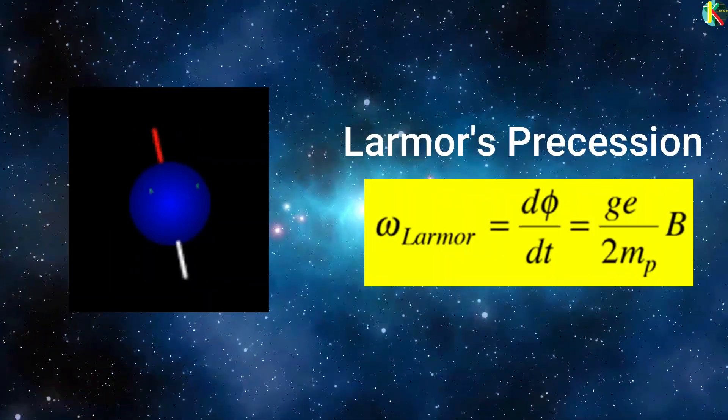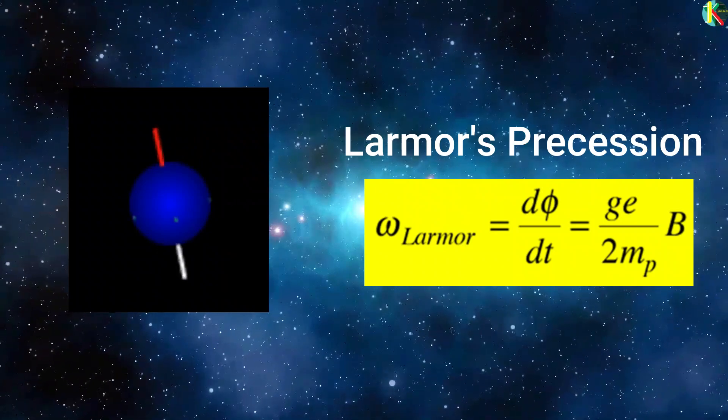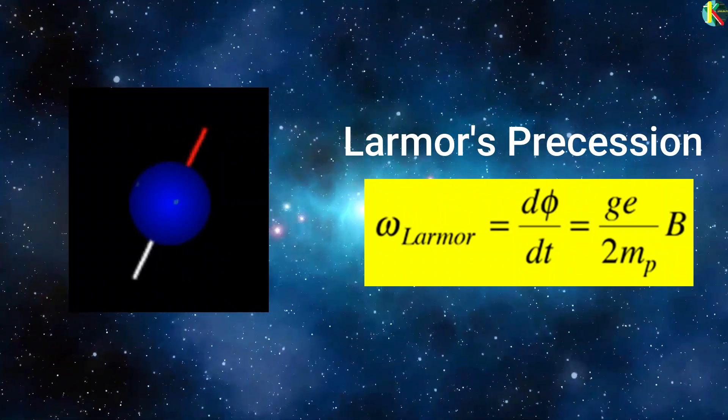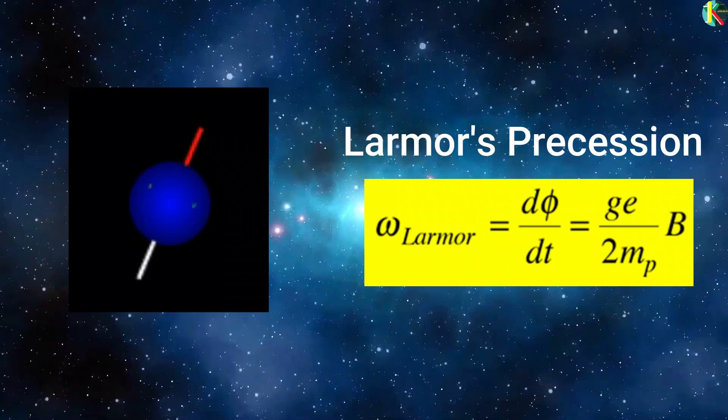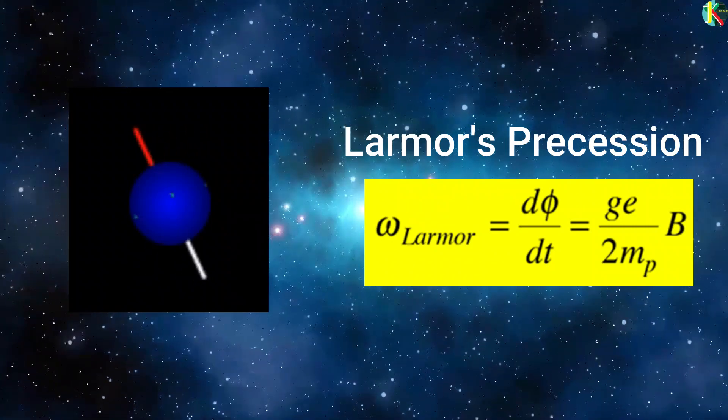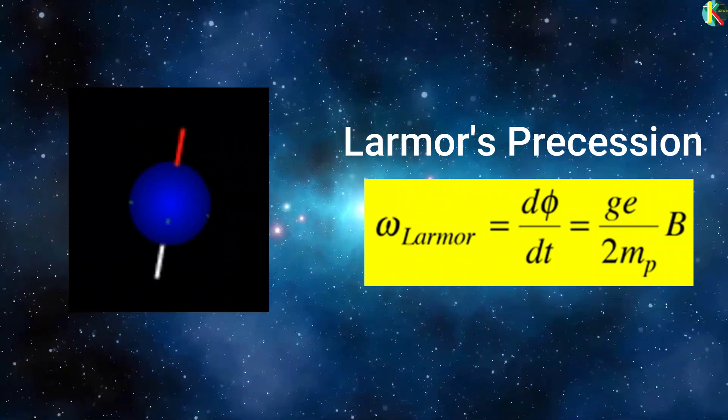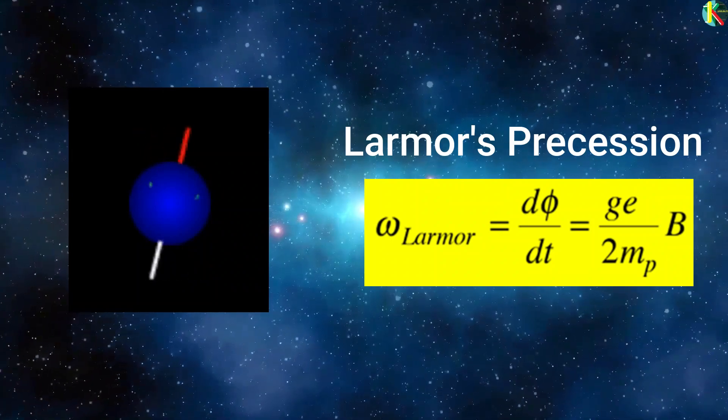We call this as Larmor's precession and its frequency depends on the g-factor. If g were exactly 2 the precession period would be equal to the cyclotron period and the muon spin direction would rotate in lockstep with the muon momentum vector.